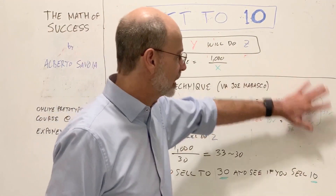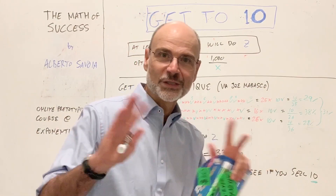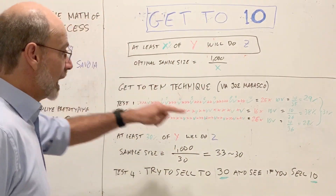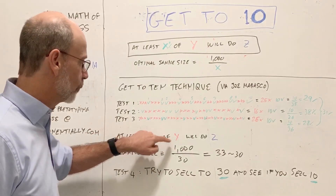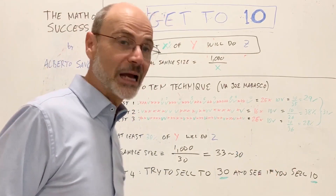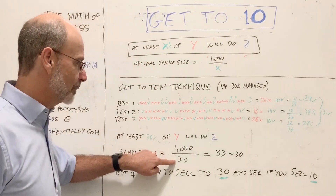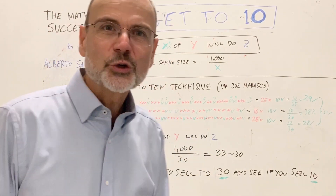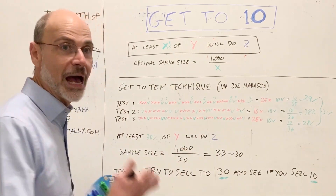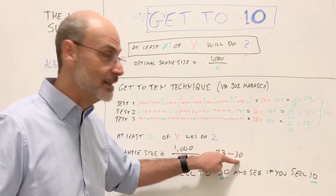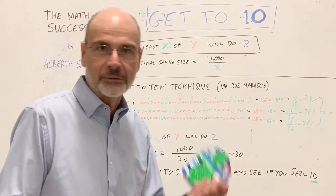Now, what do you do? You take the average of the three test results: 29, 38, and 28, which comes to 31. I like round numbers, so I'll round it to 30. Now I have an estimated X percent for my XYZ hypothesis: at least 30% of my target market will buy the markers at 10 times the price. Now I can use the original formula — take 1000, divide by 30, and you get about 33, which we round to 30. Just to confirm you've done everything right and this wasn't a fluke, instead of trying to sell 10, you talk to 30 people — because that's the optimal sample size — and see if you sell 10, give or take.